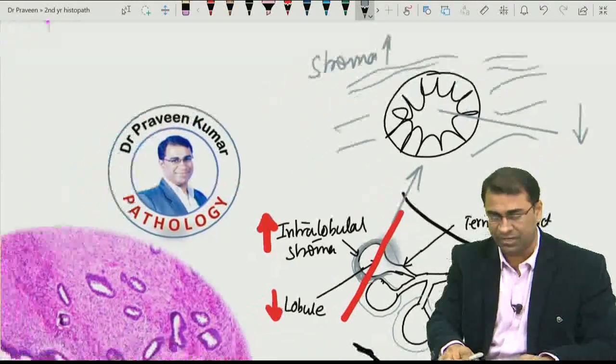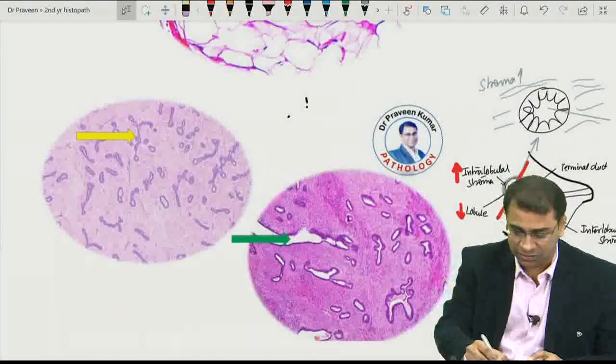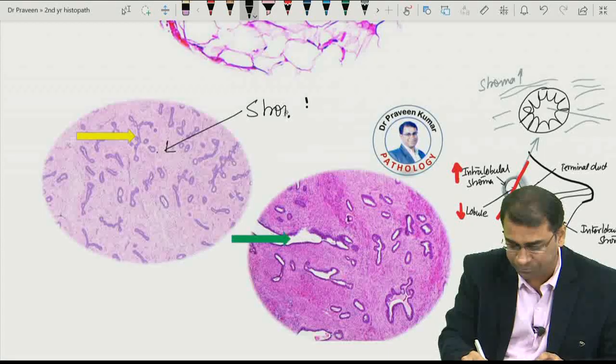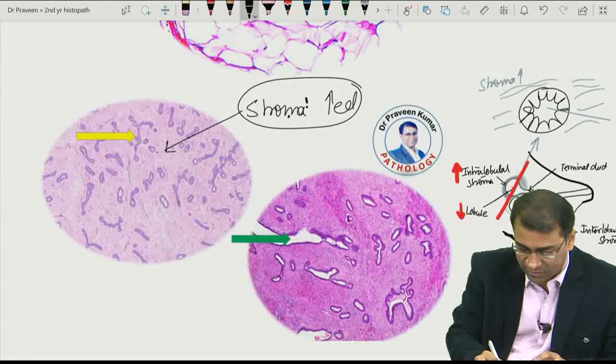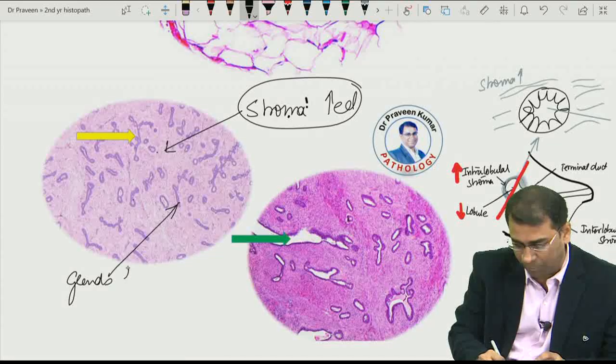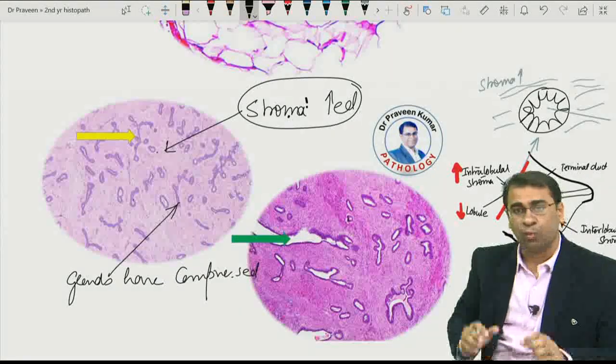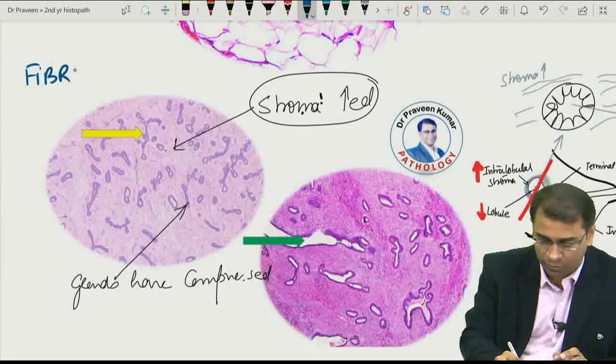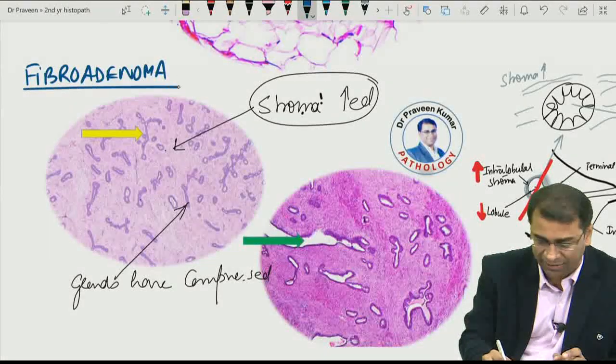And now, look at this image you see here. What you are seeing in this image and the other images, the stromal area has increased. This stroma, this pink area is the stroma. The stroma has increased, and the ducts have decreased. These glands, the glands have compressed. Why? Because this tumor is basically a fibroadenoma. It is fibroadenoma.